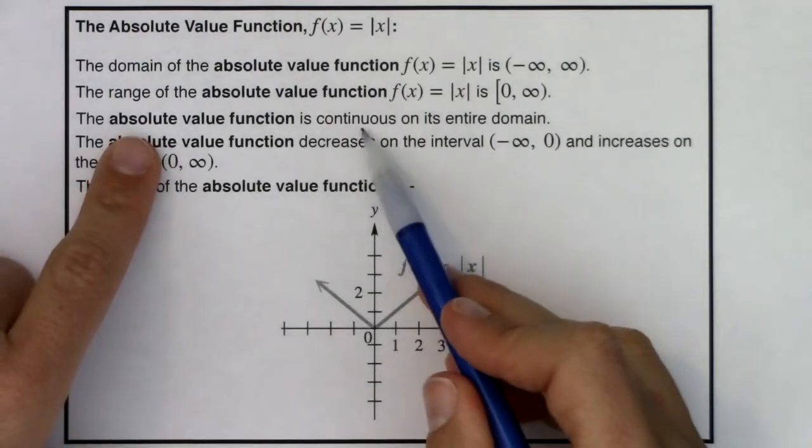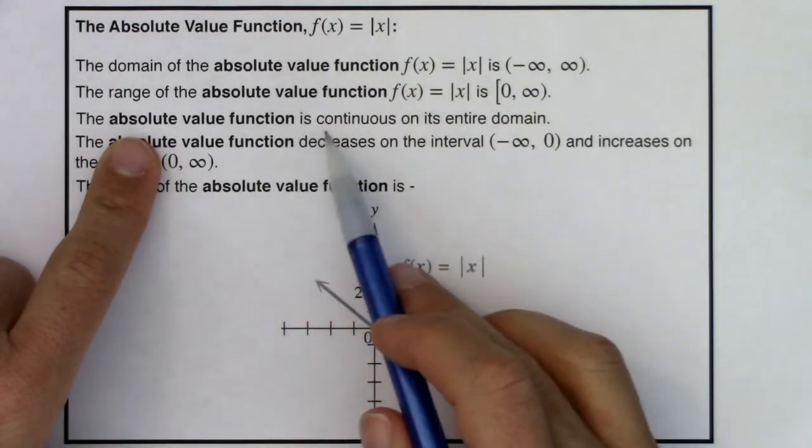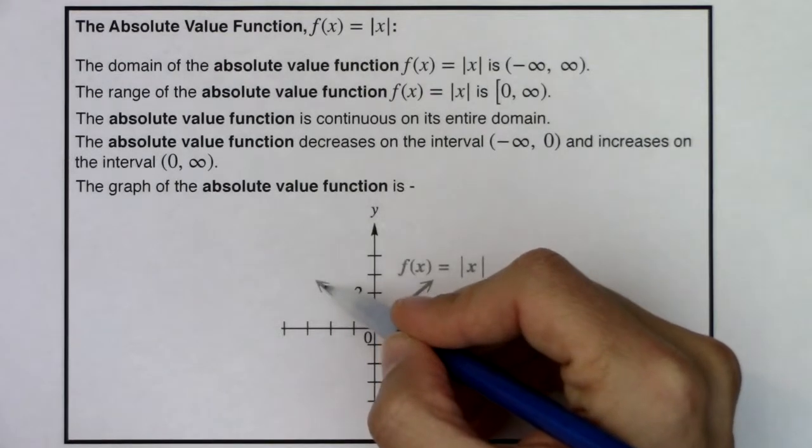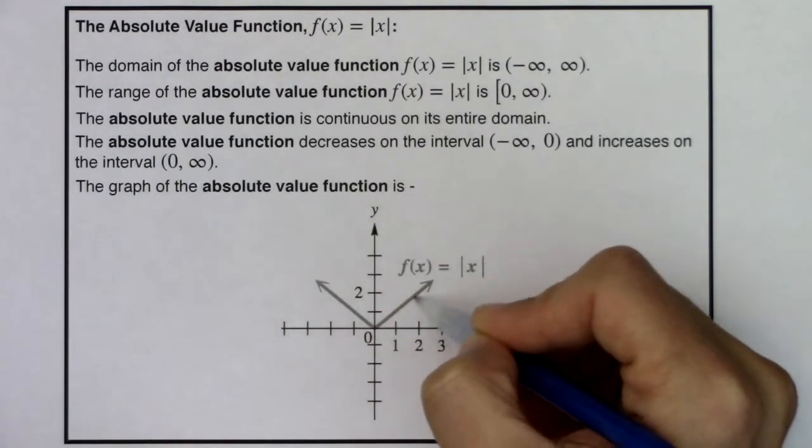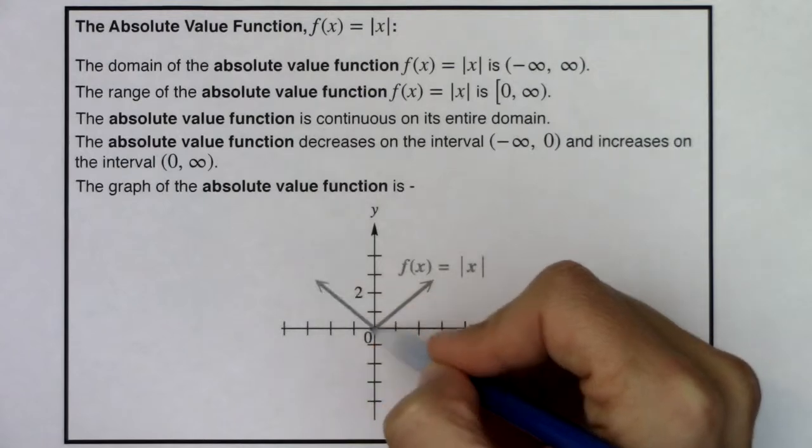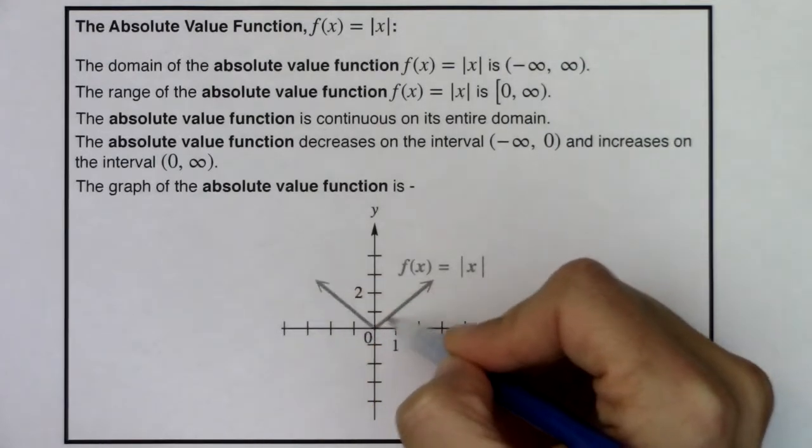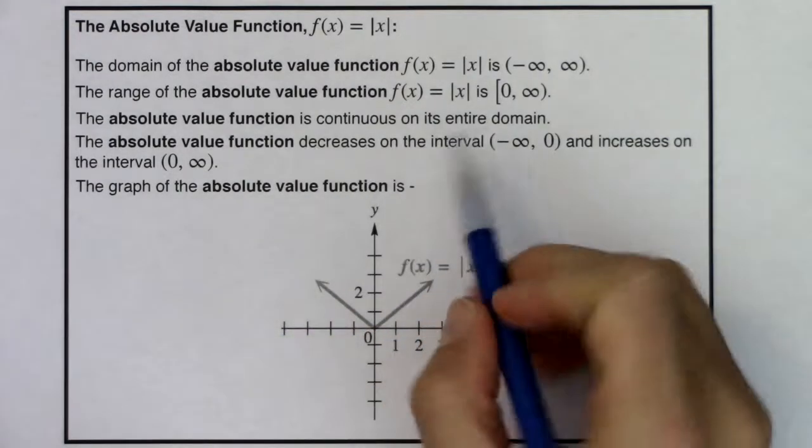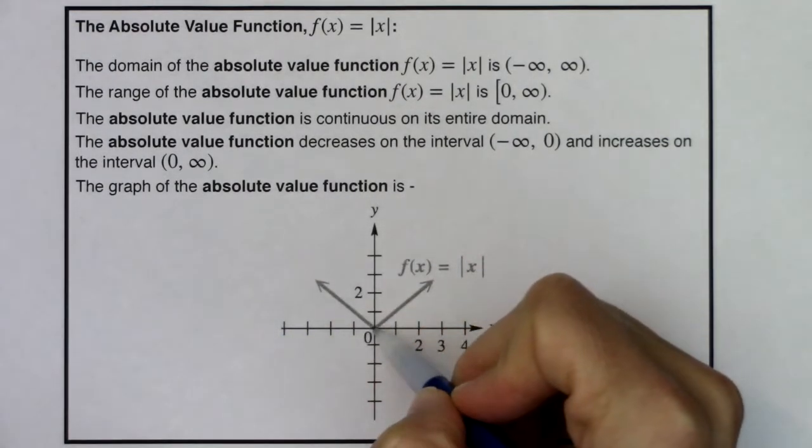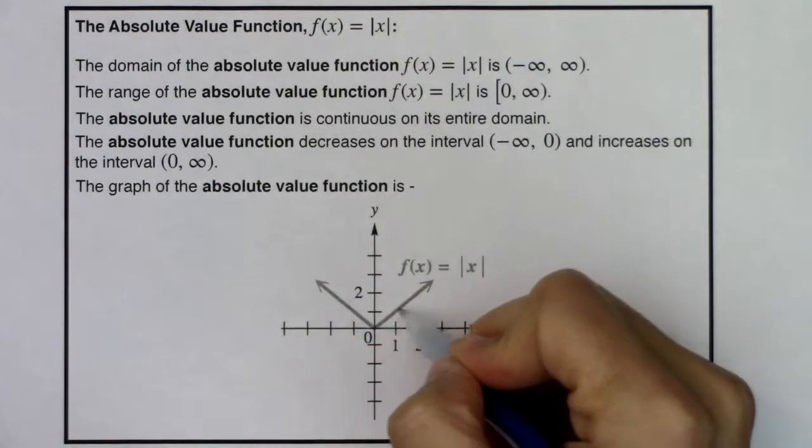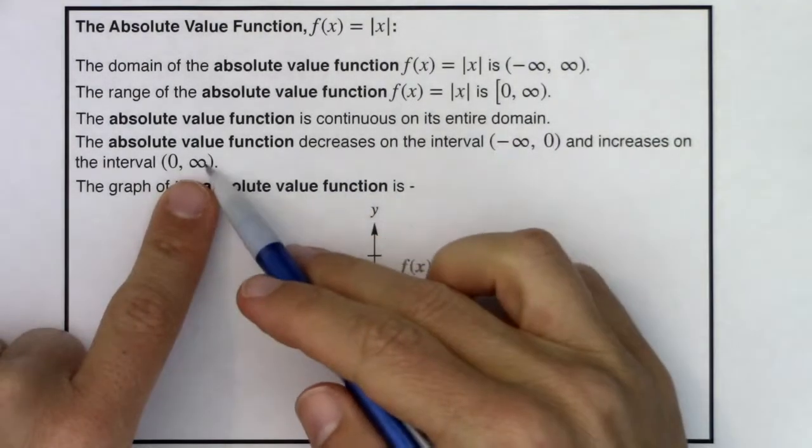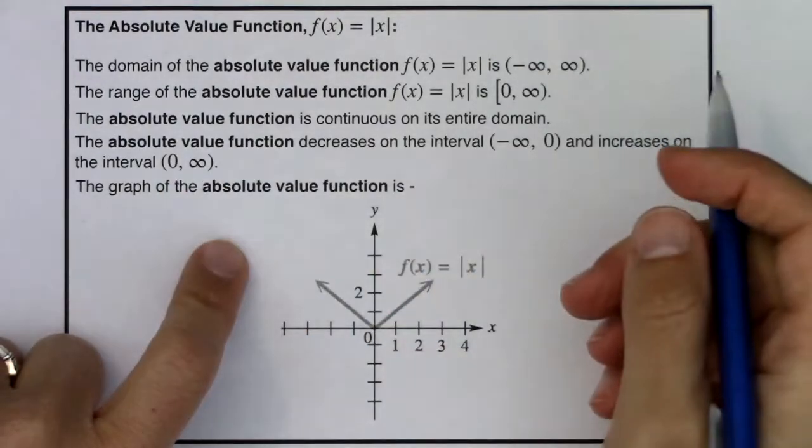So the absolute value function is continuous on its entire domain. So even though it's defined as a piecewise function, you can see that I don't need to lift my pencil. I can just continue to draw it with one fell swoop. The absolute value function decreases from negative infinity to zero and increases on zero to infinity. And just take note that these increasing and decreasing intervals are always using parentheses.